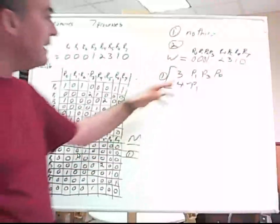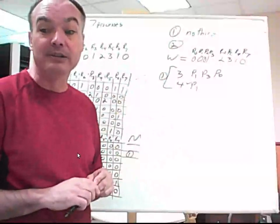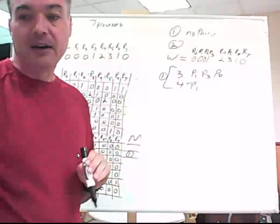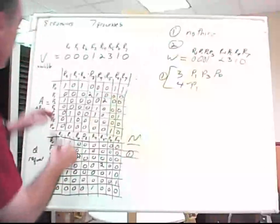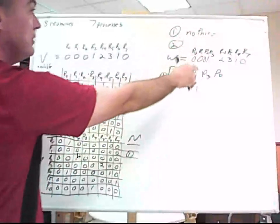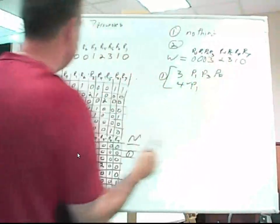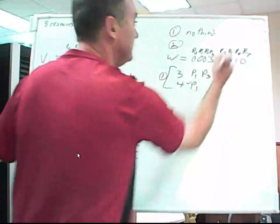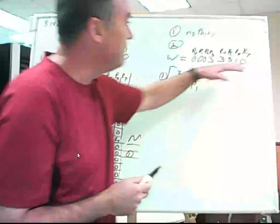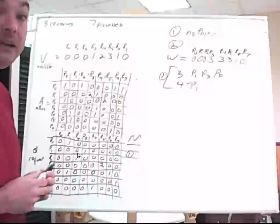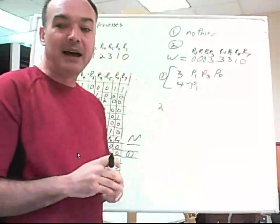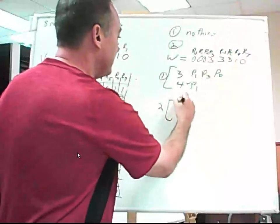Step four: we mark process one and simulate returning its allocated resources back to W. Process one has two of resource three and two of resource four allocated. After returning those, W is updated — now we have three of resource three and three of resource four available. Then we go back to step three and repeat.